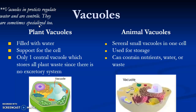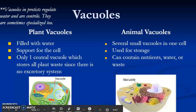In protists, vacuoles regulate water and are contractile — meaning they open and close repeatedly, kind of like a Venus flytrap closing. They are specialized, meaning they have different functions.